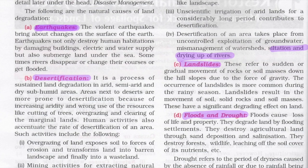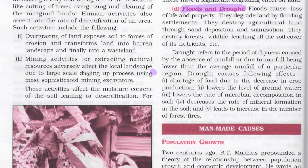Landslides refer to a sudden or gradual movement of rocks or soil mass down hill slopes due to the force of gravity. They are more common during the rainy season and result in the movement of solid rocks and soil masses. Floods cause loss of life and property, degrade land by flooding settlements, destroy agricultural land through sand deposition and salinization, and destroy forest wildlife through leaching of soil nutrients.